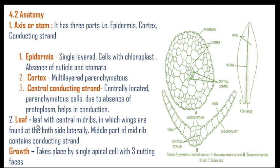The leaf has a central midrib with wings found on both sides laterally. The middle part of the midrib contains a conducting strand. These wings are the leaf lamina, and each cell possesses chloroplasm. At the center there is a midrib region with parenchymatous cells without protoplasm — that is called the central strand — and the remaining cells at the periphery are part of the main midrib.